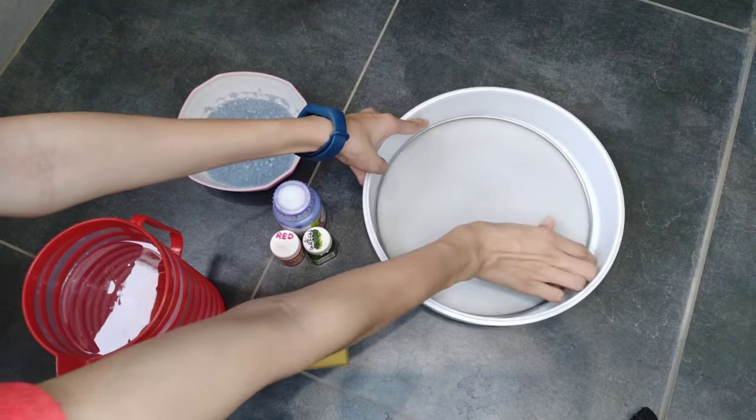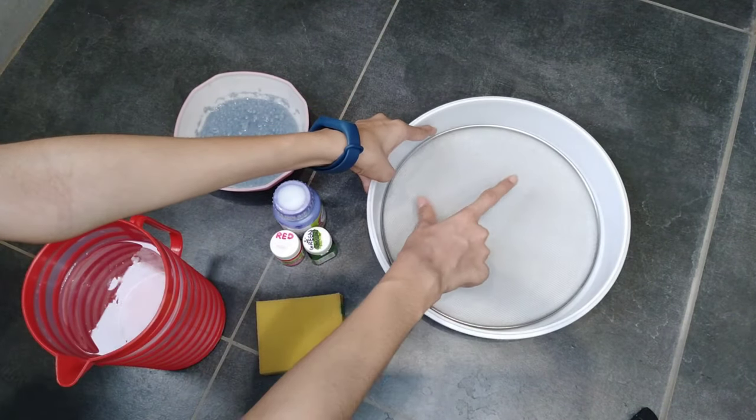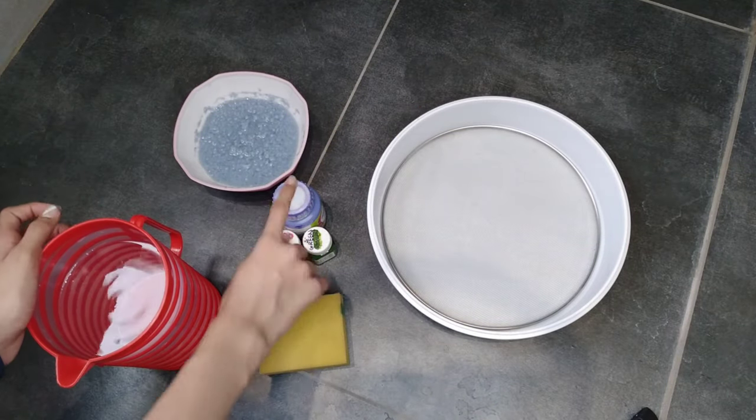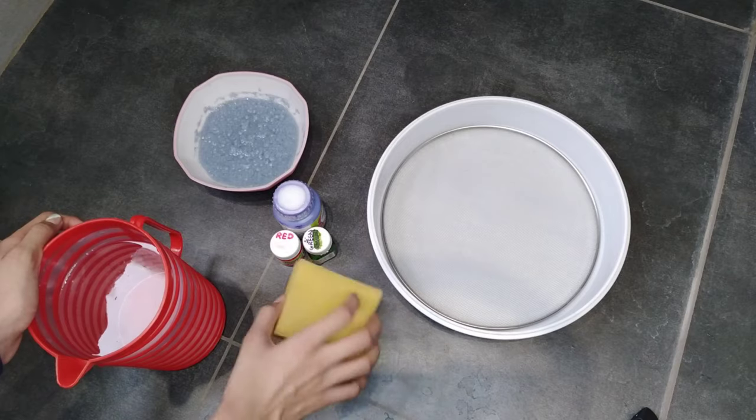You will need a container, a strainer that fits in the container, water, the pulp, some colors which are optional, and a sponge or a rough cloth.